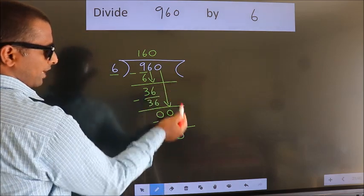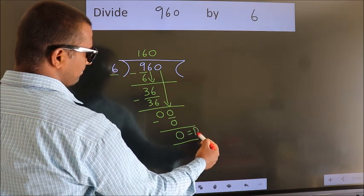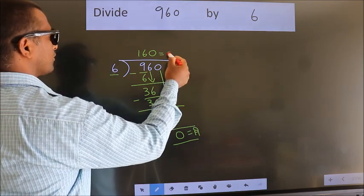No more numbers to bring it down. So, we stop here. This is our remainder. This is our quotient.